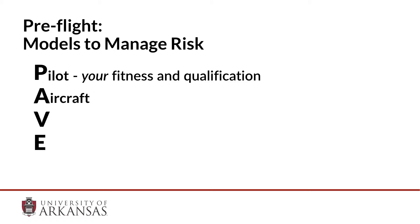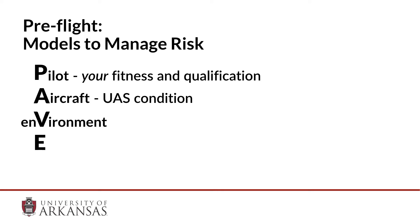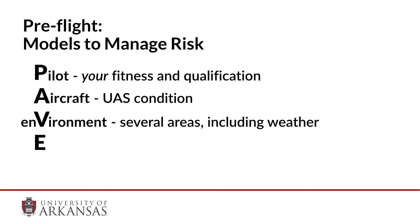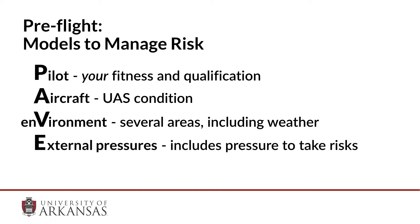Aircraft refers to the UAS condition, how it was maintained, and any other issues that you may have with the equipment. The environment, which includes several things, especially includes weather. External pressures, which include pressure to take unnecessary risks, are one of the things that you must be keenly aware of.